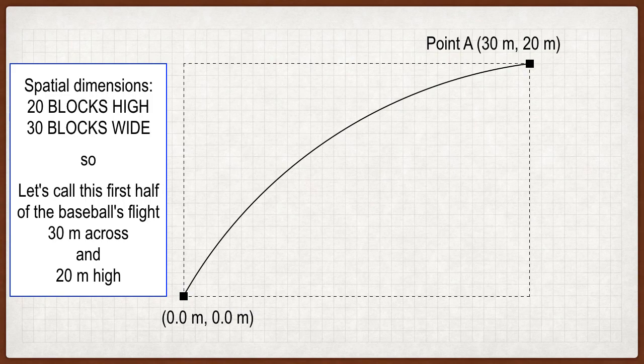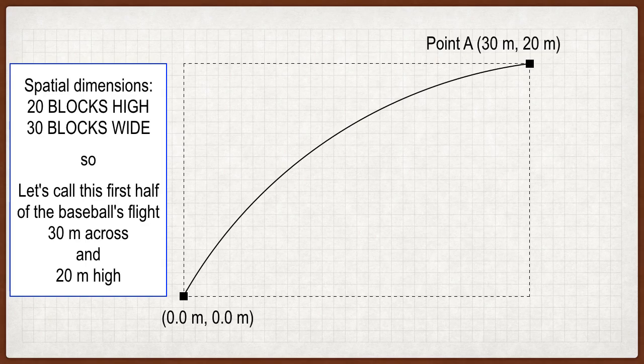Let's say we have a baseball 30 meters downrange when it hits point A, and 20 meters up when it hits point A. I typically use the letter A to represent the very top of the arc of this kind of parabola. At Mission Control, this would be the apogee — A-P-O-G-E-E — mentioned in the textbook.